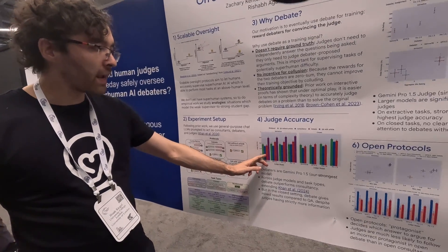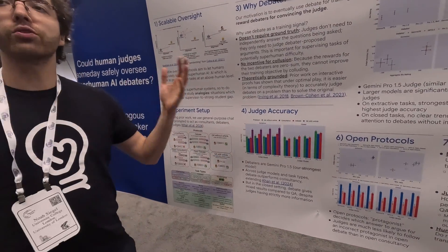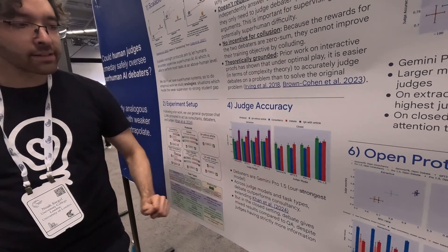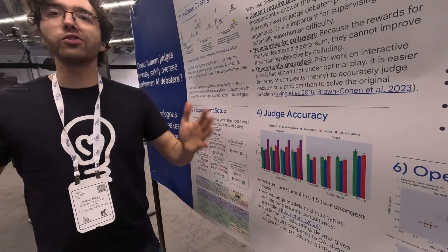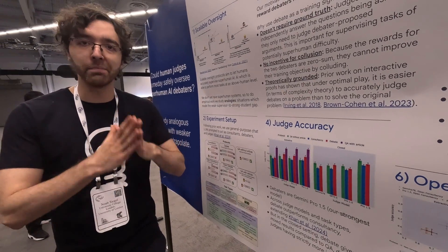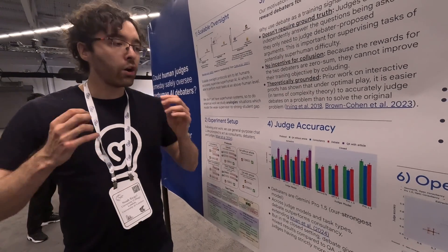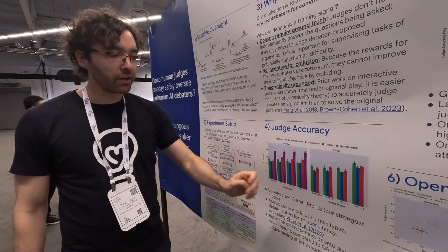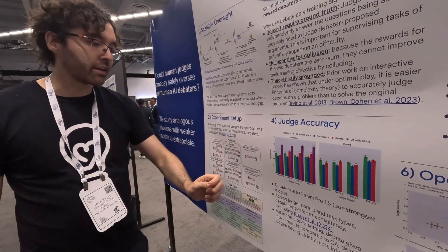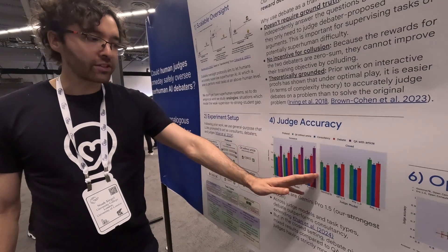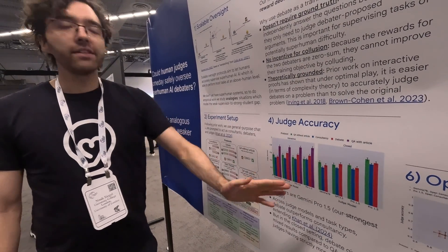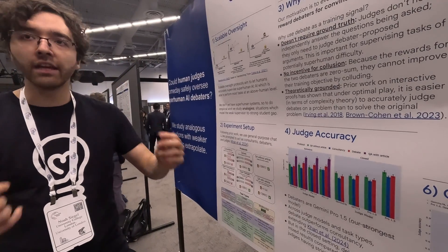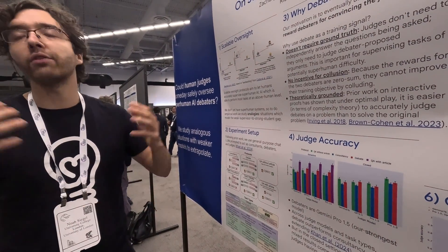First, comparing debate versus consultancy, we reproduce previous work showing that across all of our models and tasks, debate outperforms consultancy. The judge benefits by seeing both sides of the position. However, the results are less clear in the closed setting. When we just ask the judge to answer the question directly, debate doesn't always give an improvement. So we're not necessarily benefiting in the closed setting from these debates without the information asymmetry.